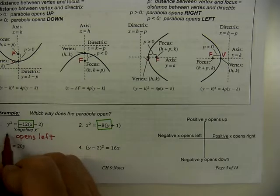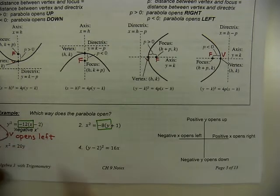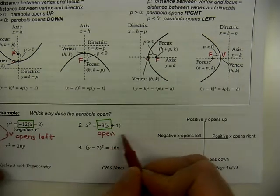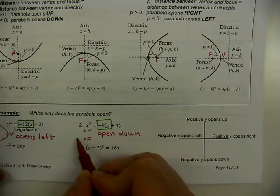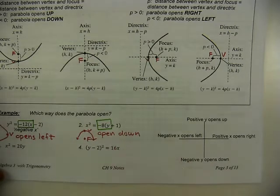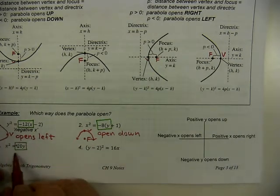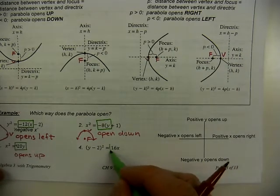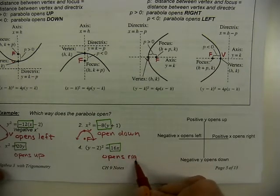So for a negative X, the vertex is there and the focus is to the left — the parabola wraps around the focus. For number two with a negative Y, it opens down, focus is below the vertex. Number three with a positive 20 paired with Y opens up. And number four with a positive 16X opens to the right. Those are the basics of determining which way it opens.